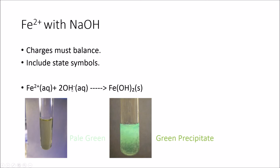Next, Fe2+ with sodium hydroxide. The ionic equation follows the same logic — Fe has a 2+ charge, so two OH- ions are needed to balance, giving Fe(OH)2 as a solid. Include those state symbols. The colour change: it starts as a very pale green — so pale you can barely notice it without a white background — and when it reacts with hydroxide ions, you get a slightly darker green precipitate. Remember: it is a precipitate and it is a solid.